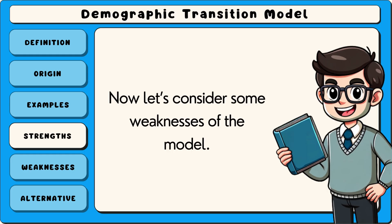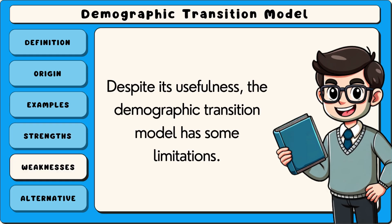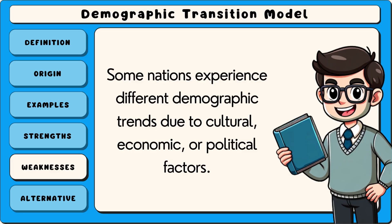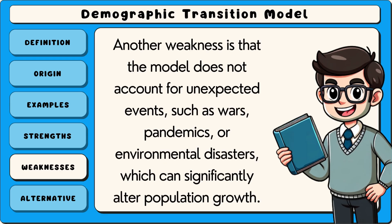Despite its usefulness, the demographic transition model has some limitations. One major criticism is that it assumes all countries follow the same pattern, which may not apply to every society. Some nations experience different demographic trends due to cultural, economic or political factors. Another weakness is that the model does not account for unexpected events such as wars, pandemics or environmental disasters, which can significantly alter population growth.